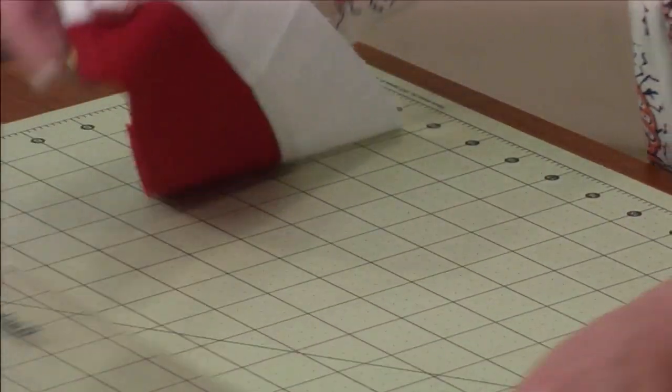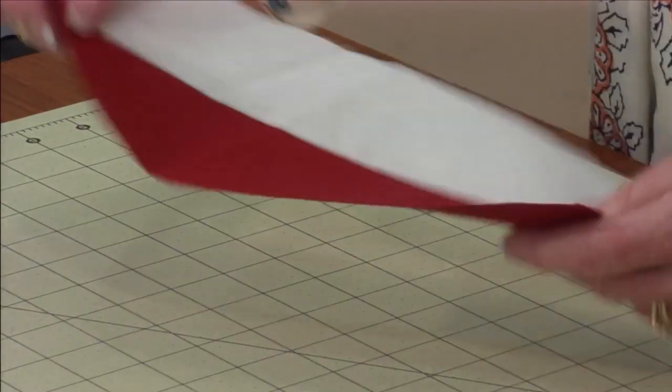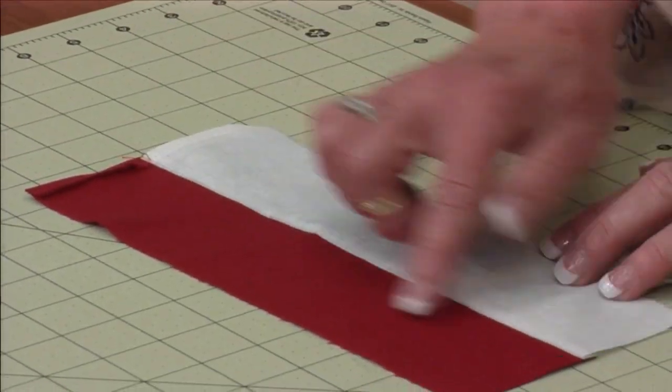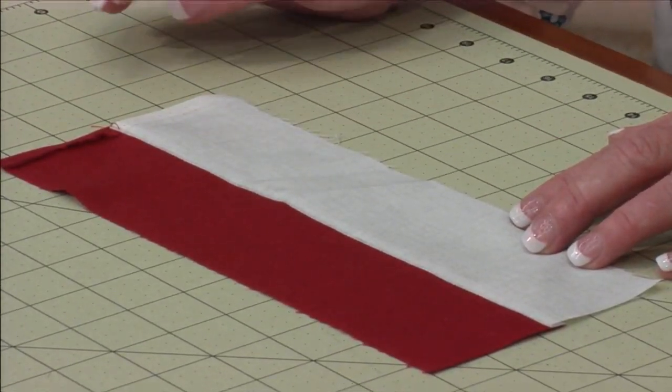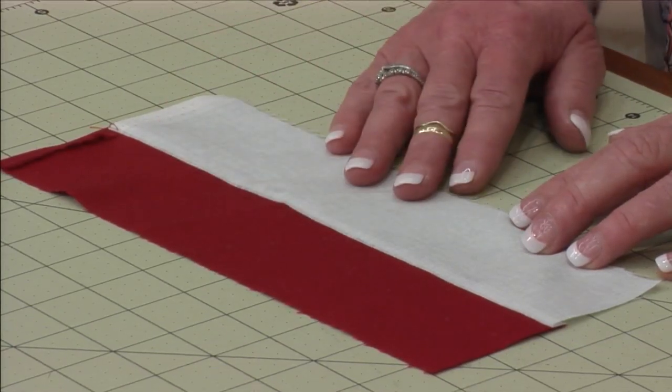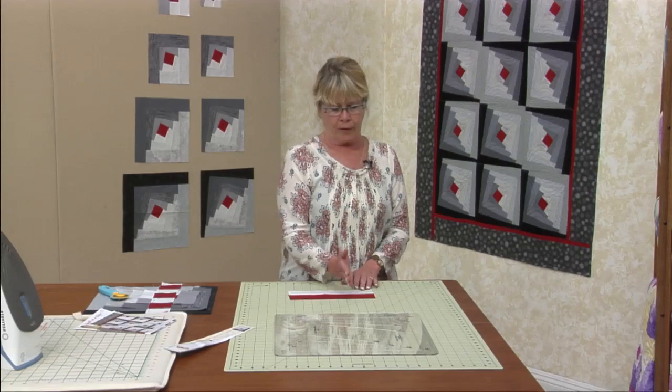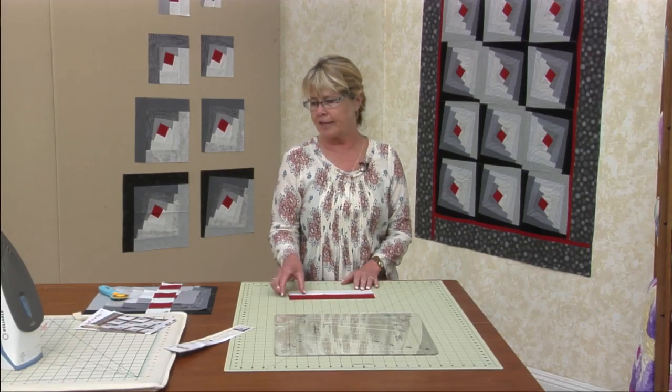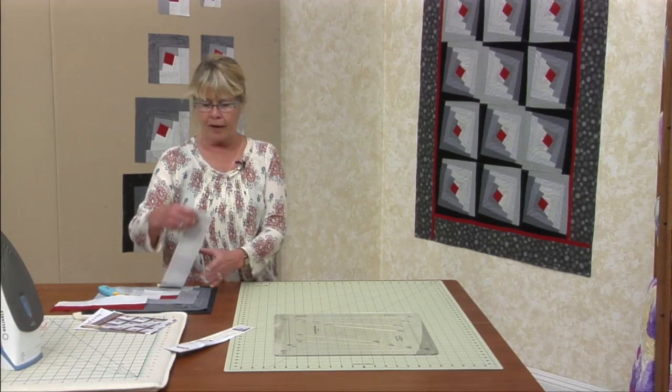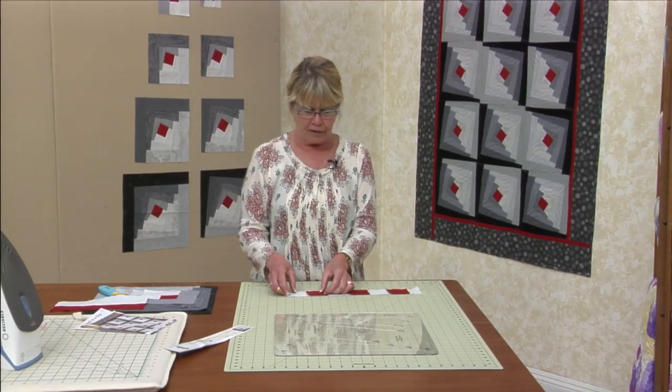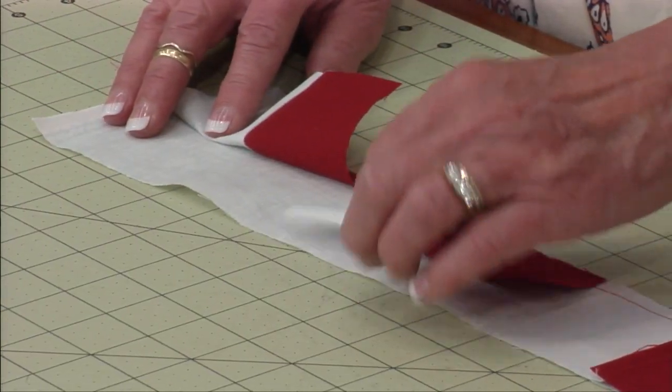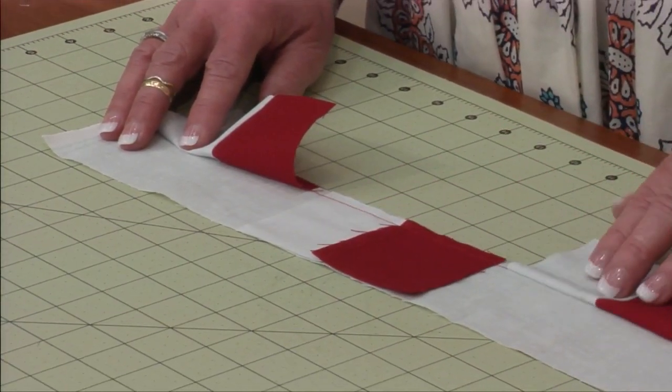We're going to start with sewing our center to our first light. This is going to be the red center and first light. And I'm just going to always press my seams away from my center. Once we get that done we're going to slice it into two and a half inch segments. And from there we're going to sew those segments onto another first light. This begins the way of the block.